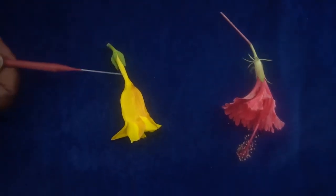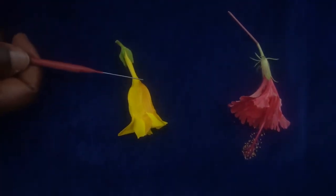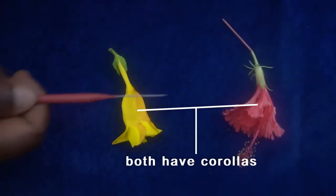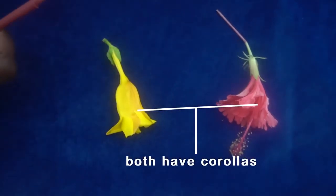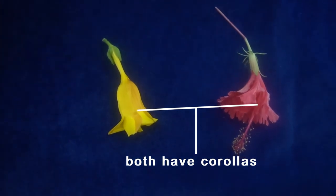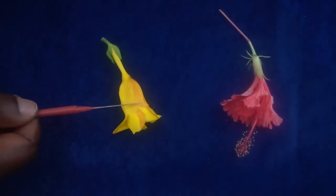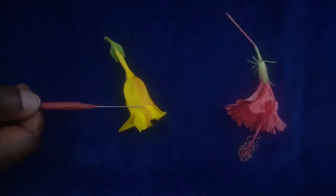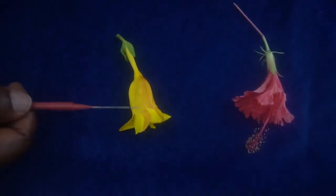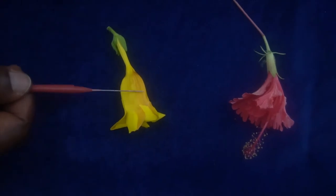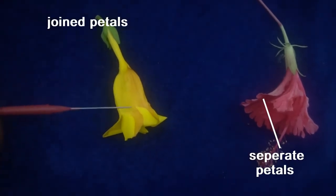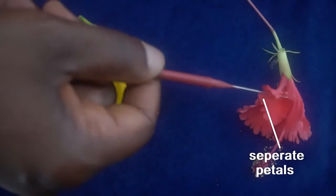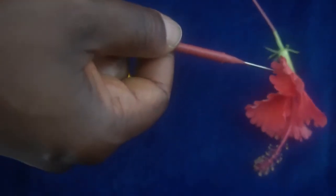Look at these two flowers. They both have corollas, but in this one the corolla — look at the corolla here — the petals are joined, but in this case the petals are separate.